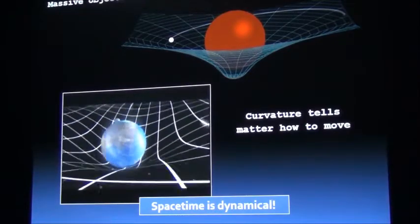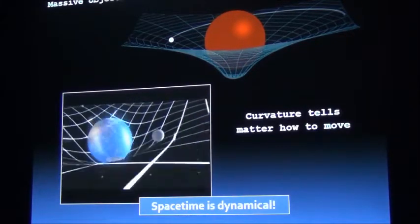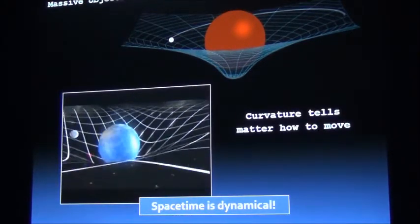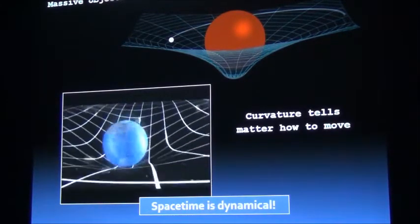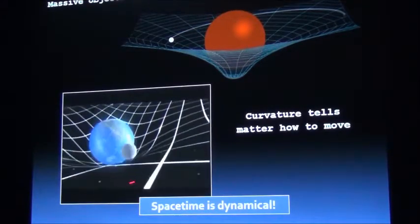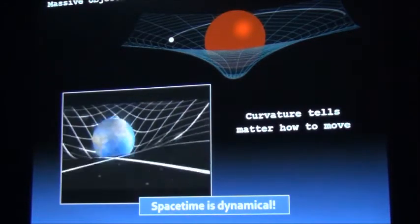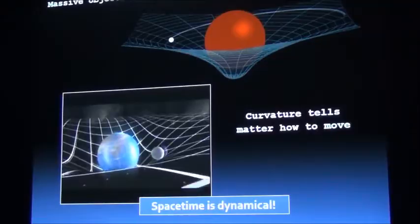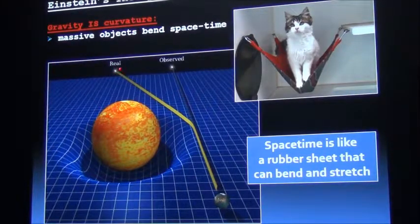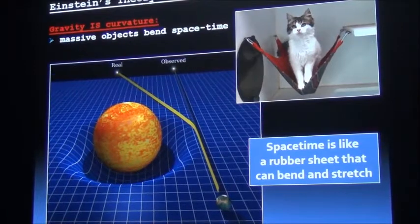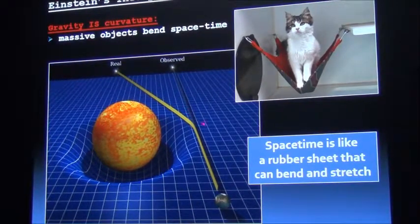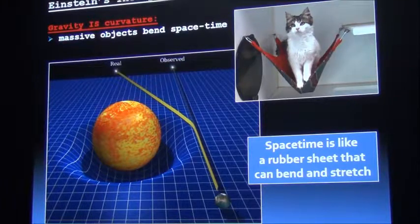An object that has a mass bends space-time, and it's the bending of space-time that tells other objects how to move. They're not following what you would think of as a straight line — they're following a straight line in the sense of following the curvature of space-time. This also explains why a ray of light coming from a distant star will follow a trajectory that gets bent by the presence of a massive object between you and the star — it's the curvature of space-time itself that causes that ray of light to bend.